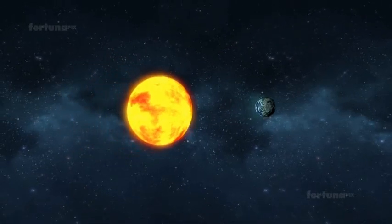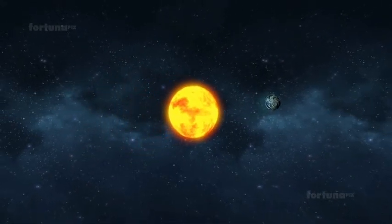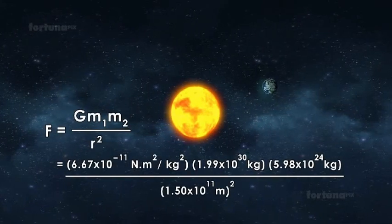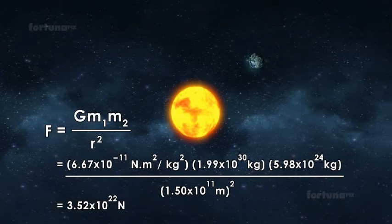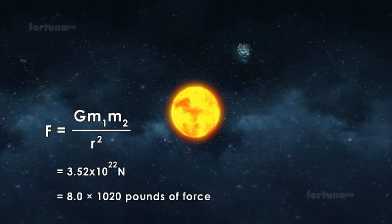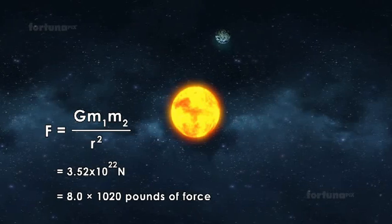If we substitute these numbers into the equation, the force of gravity between the sun and earth is 3.52 times 10 raised to 22 Newtons, or about 8.0 times 10 raised to 20 pounds of force.